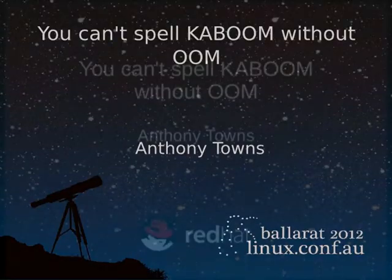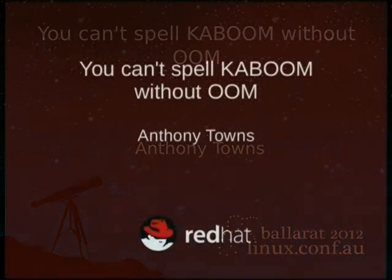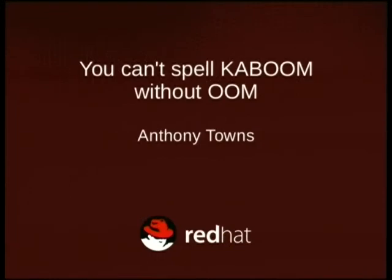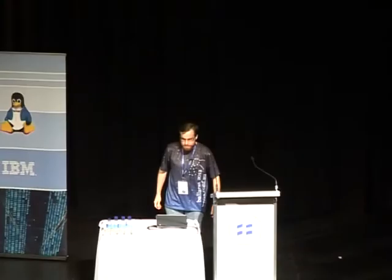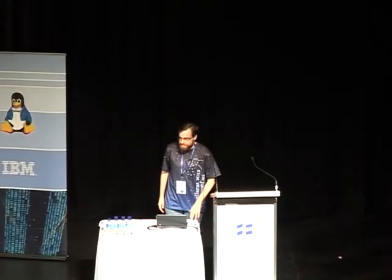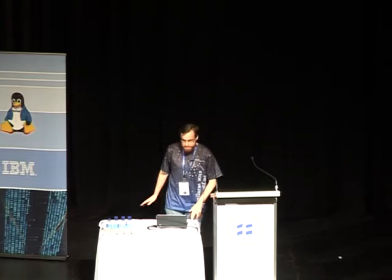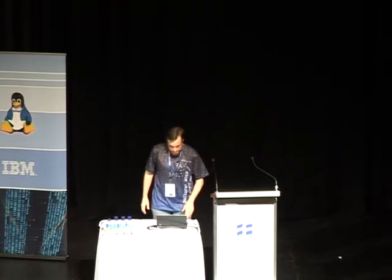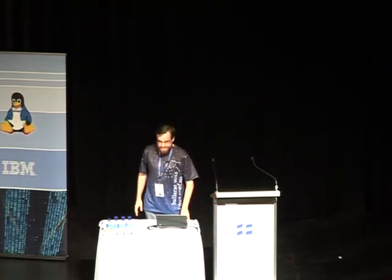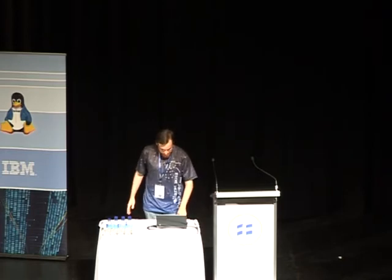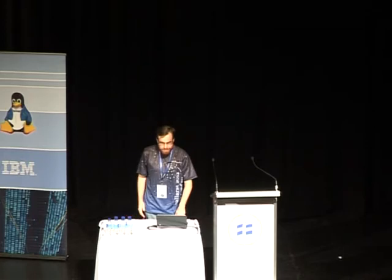We're a minute and a quarter early, that's excellent. My name's Anthony, I'm also known as AJ, I'm also known as a Debian guy, but currently I work for Red Hat. I'm a release engineer in the Brisbane office for Red Hat.